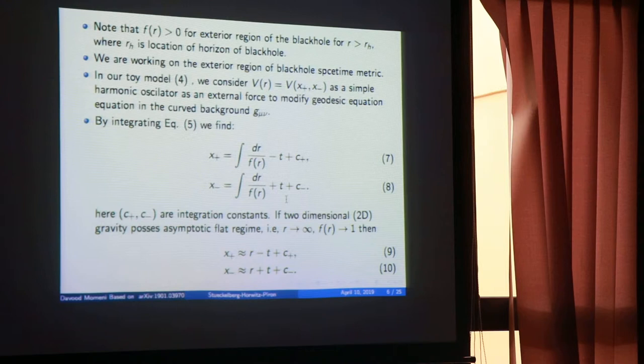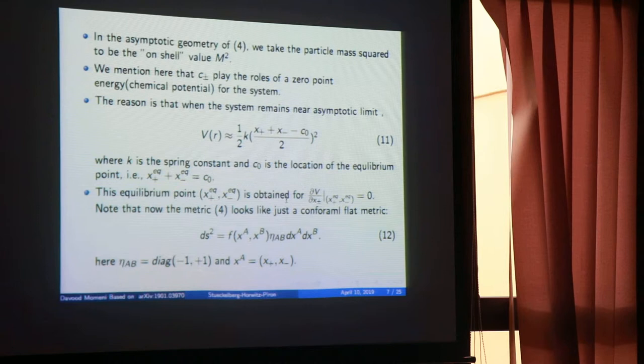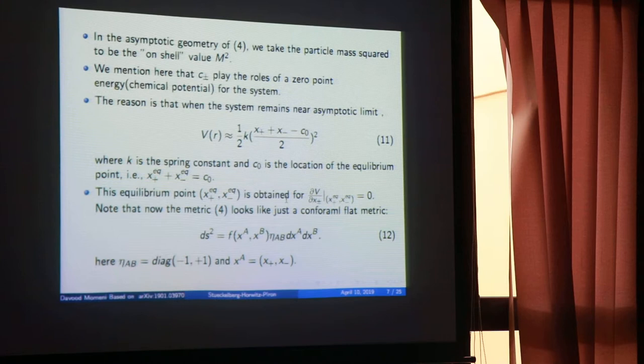We consider some assumptions about the geometry, taken as the geometry of a black hole. We are sitting outside the region called the horizon and trying to integrate the equation of motion. In standard classical and quantum mechanics, any system near an equilibrium point behaves like a harmonic oscillator, so we take the harmonic oscillator as a model for the particle.